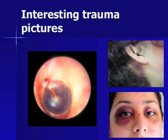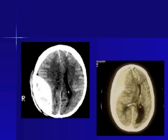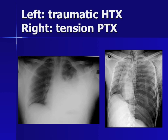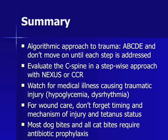In summary: maintain an algorithmic approach to trauma using the ABCDE mnemonic, and do not move on until each step is addressed. Evaluate the C-spine with the NEXUS criteria. Always watch for medical illness such as dysrhythmia, syncope, or hypoglycemia causing traumatic injury. For wound care, never forget the timing and mechanism of injury and tetanus status. Most dog bites and all cat bites require antibiotic prophylaxis with only three oral options: amoxicillin-clavulanic acid, a fluoroquinolone plus clindamycin, or trimethoprim-sulfamethoxazole plus clindamycin.